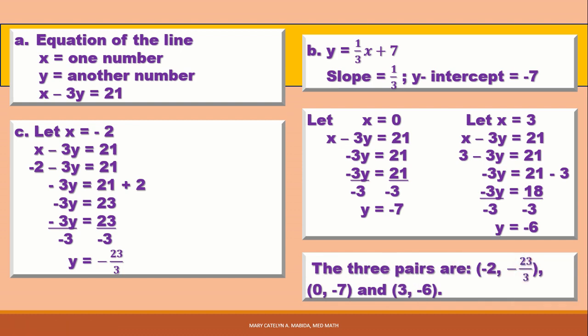Therefore, the three pairs are: negative 2 and negative 23 over 3; 0 and negative 7; and 3 and negative 6.